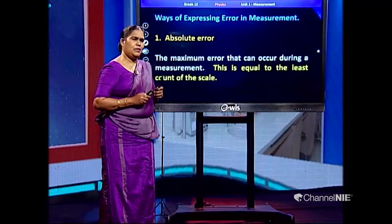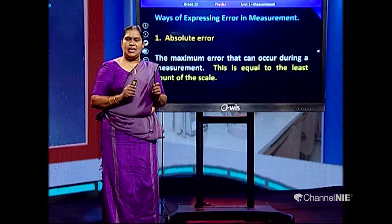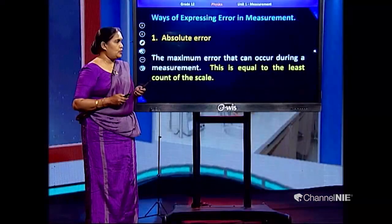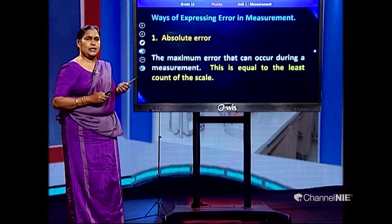When you take a measurement, according to what you are measuring you have to select the instrument, and then only you can get the measurement accurately without any error. What is the meaning of error? Error is not the mistake that we do when taking a reading — it has a scientific definition. When you take measurements in the laboratory, we introduce three types of errors.